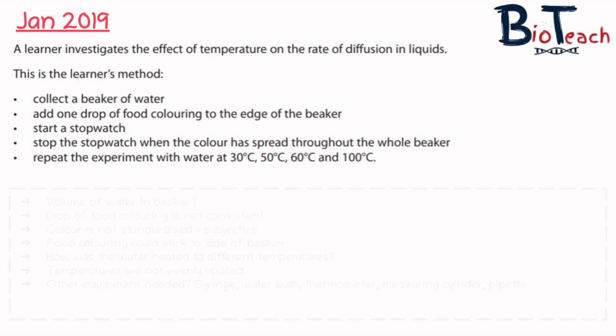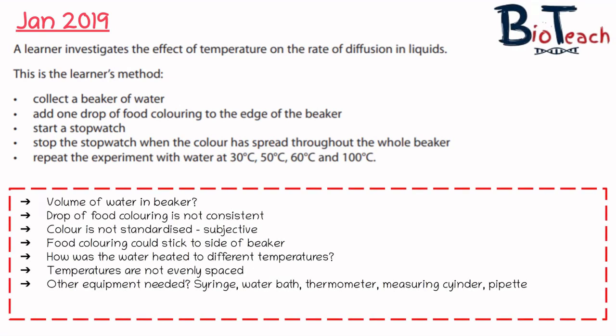Critiquing the method: the volume of water in the beaker hasn't been specified. The volume of food colouring isn't consistent — one drop from one pipette might be larger than from another. The spread of colour is subjective, making observation unreliable. Food colouring might stick to the side of the beaker, affecting results. How was the water heated to different temperatures? How are temperatures measured? Equipment like a thermometer, water bath, measuring cylinder, syringes, and pipettes haven't been mentioned — all of which are important.